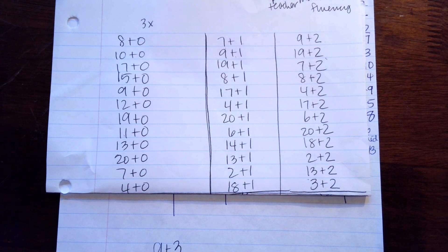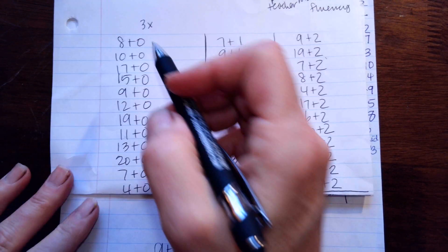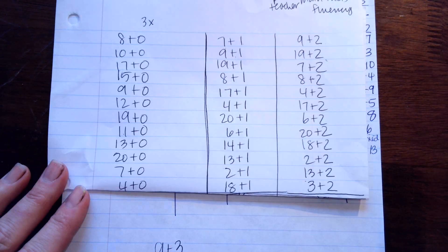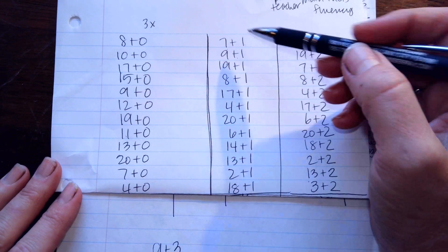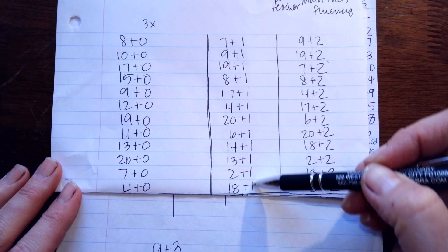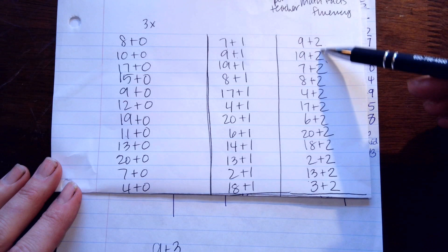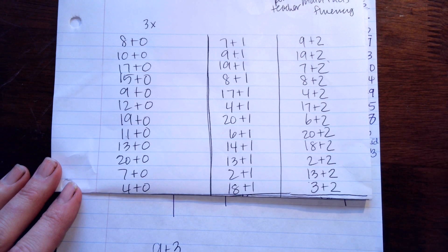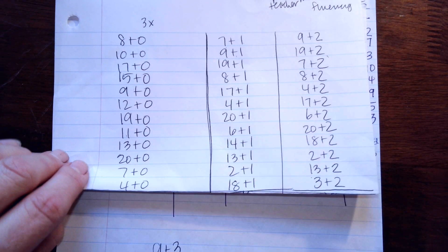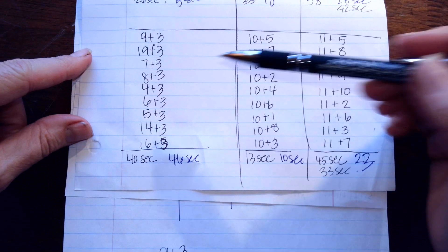Okay, so you're going to pause the video and you're going to do this row three times, then you're going to do this row three times, then you're going to do this row three times, then you're going to do this row three times.